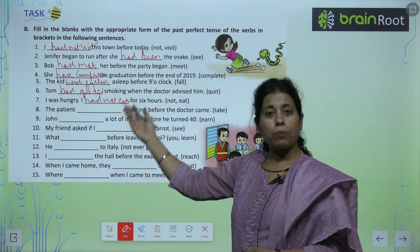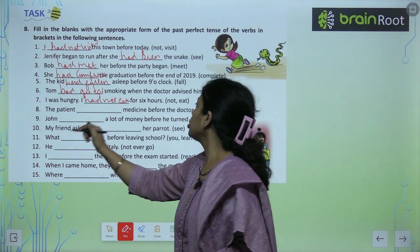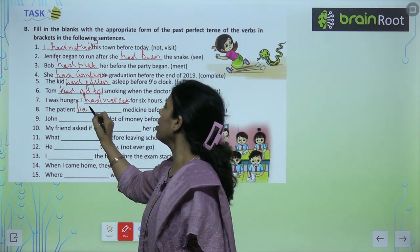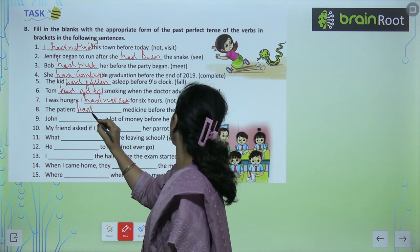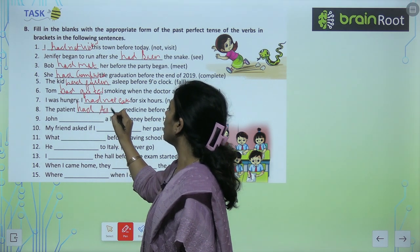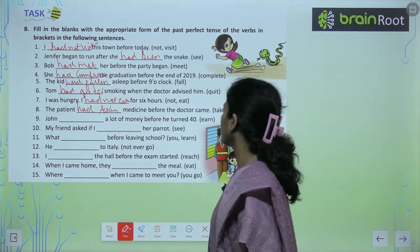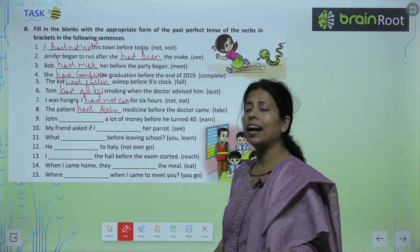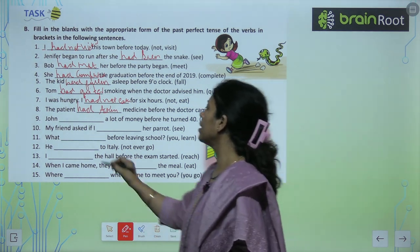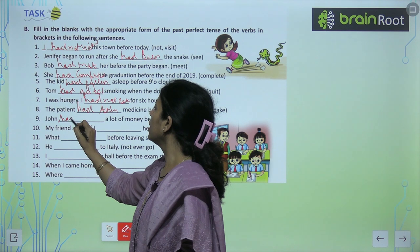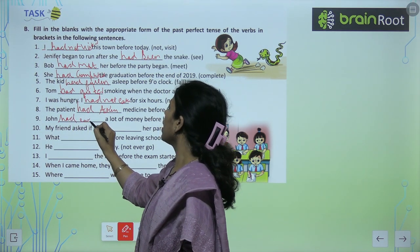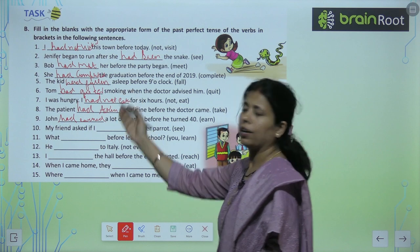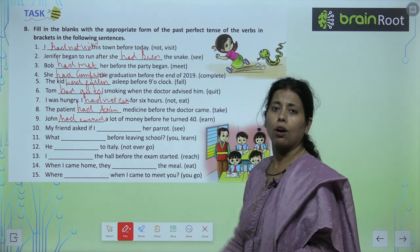The patient had taken medicine. Bahot simple hai — aapko sirf subject ke saath had add karna hai. The John had earned — E-A-R-N-E-D. Aise hi aap in remaining questions ko solve karenge.